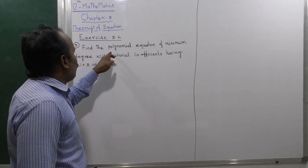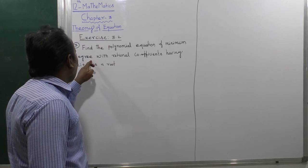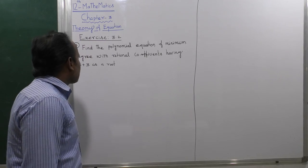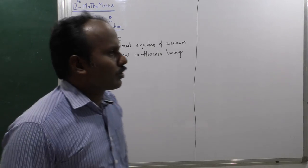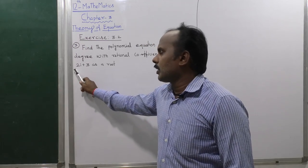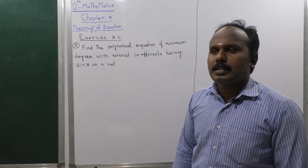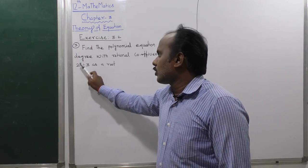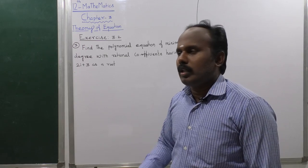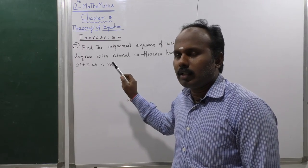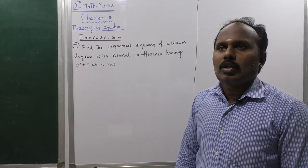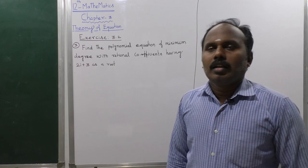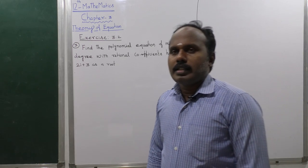Find the polynomial equation of minimum degree with rational coefficients having the root 3 plus 2i. Since complex roots come in conjugate pairs, if 3 plus 2i is a root, then 3 minus 2i is also a root. The quadratic equation is formed as x squared minus (sum of roots) times x plus (product of roots) equals 0.